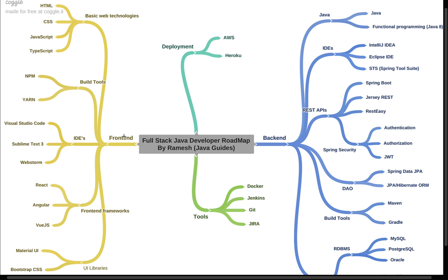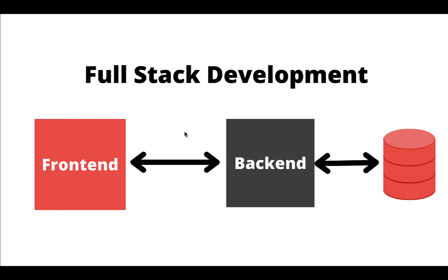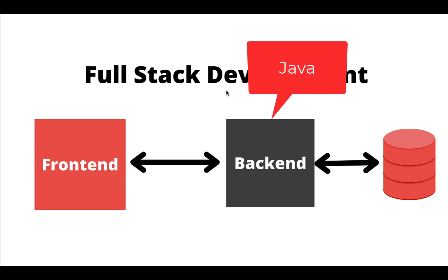Before jumping into this full stack Java developer roadmap, let's first understand what is full stack development and the role of a full stack Java developer. This is the full stack web application architecture — we have front end and back end. The back end talks with the database. Front end is also called client side, back end is called server side. A full stack Java developer works on both, using Java at the back end.